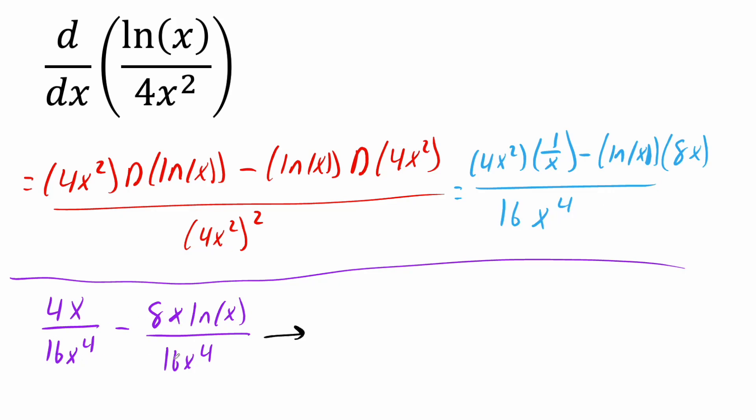So 4 divided by 16 is going to give us 1 divided by 4. x raised to 4 is in the denominator, the numerator we have an x. So all we're going to do is say x raised to 4 minus 1, so we get 3. So we get 1 divided by 4x cubed minus, so 8 divided by 16 gives us a half. Likewise, x divided by x raised to 4 gives us the same idea of this piece. So we have minus ln(x) divided by 2x raised to 3.